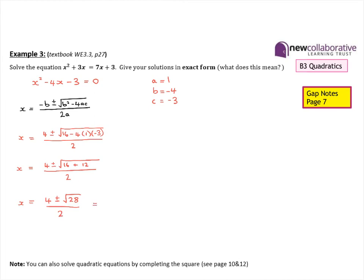We can simplify the square root of 28: since 28 is 4 times 7 and the square root of 4 is 2, we can write the square root of 28 as 2 root 7. So that becomes 4 plus or minus 2 root 7 all divided by 2, which gives 2 plus or minus root 7. Therefore x equals 2 plus root 7, or x equals 2 take away root 7.